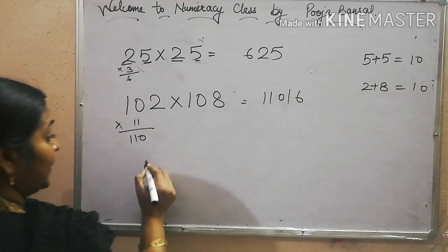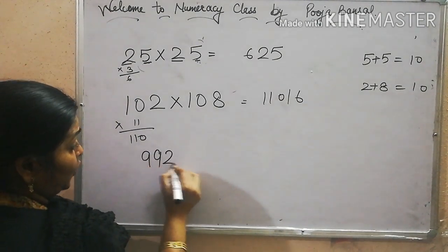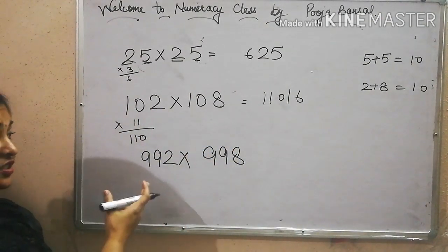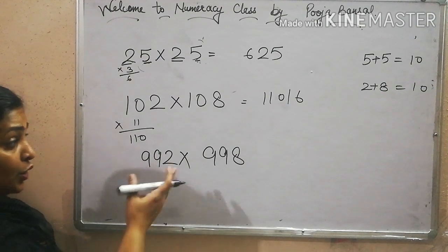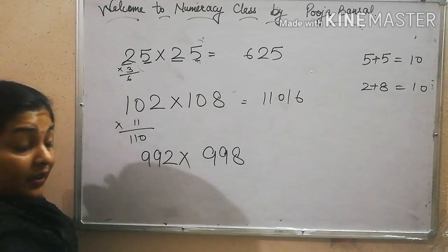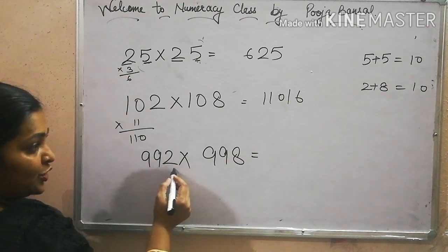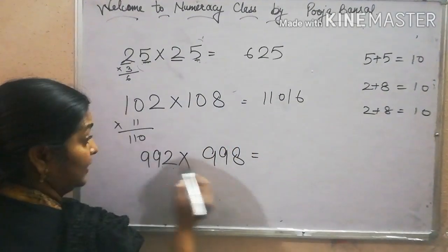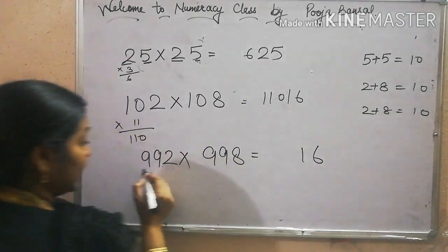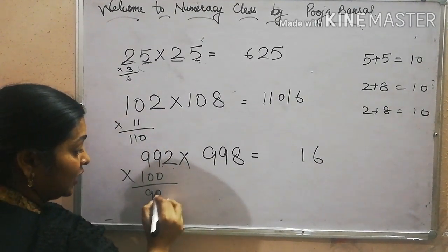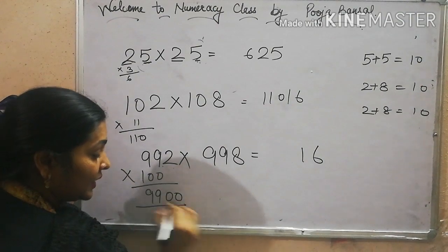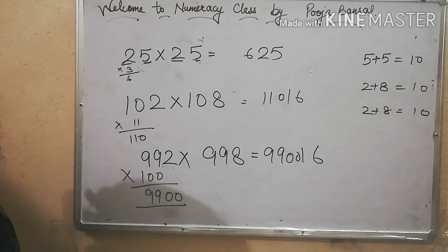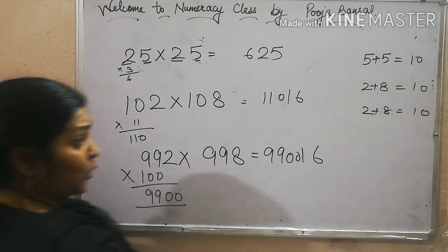Let's try a few more examples. 992 into 998. This is the common problem you also faced in distributive property. Now see its solution. 2 plus 8, 10. So 2 eights are 16, and 99 into 100, that will be equal to 9900. So easy it has become. Let me do one more problem.